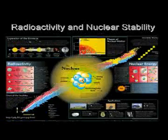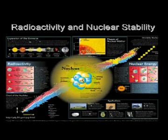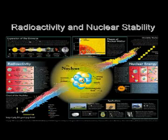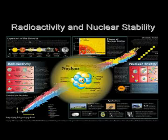We're going to look at radioactivity — what makes something radioactive, what are the different kinds of radioactivity, why are some things radioactive and others aren't, and why do some elements even exist and other elements don't exist naturally occurring.